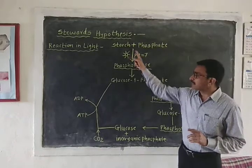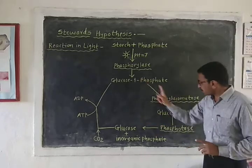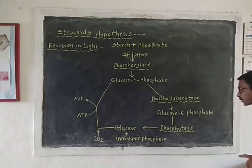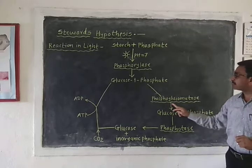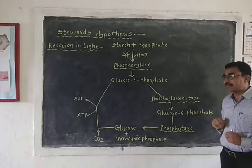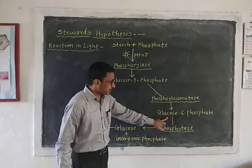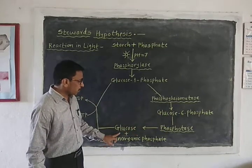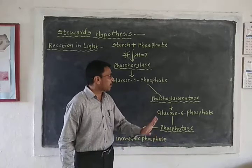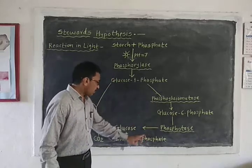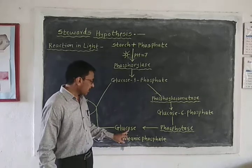This glucose-1-phosphate is then converted into glucose-6-phosphate. The glucose-1-phosphate is converted to glucose-6-phosphate with inorganic phosphate, and finally the glucose-6-phosphate is converted into glucose and inorganic phosphate with the enzyme phosphatase.